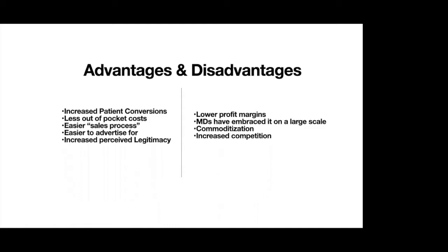When private insurance and Medicare cover regenerative medicine, here are the advantages. Number one, it's much easier to convert patients because it's less out-of-pocket cost — it's a much easier sales process. You don't have to go through the whole seminar and education process. It's a whole lot easier to advertise for versus ads that can't say it's covered by insurance or not covered by Medicare.